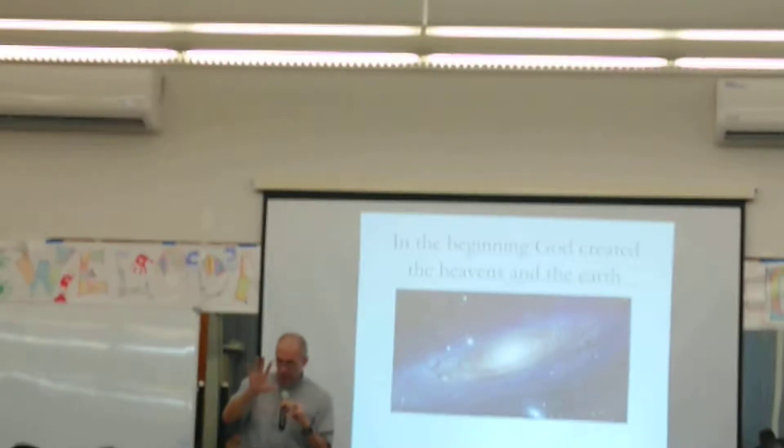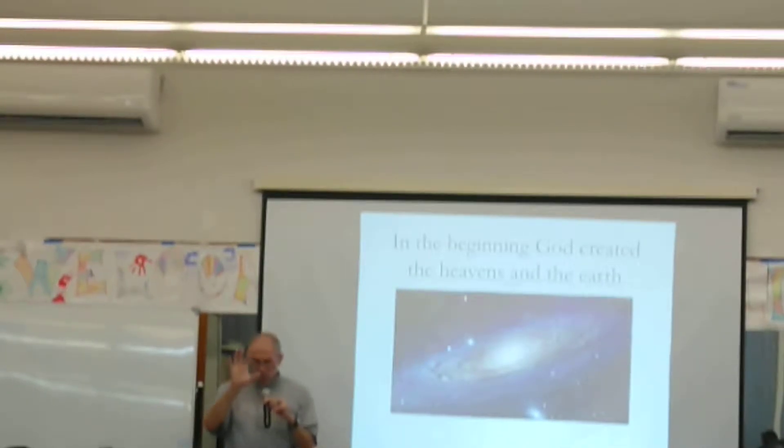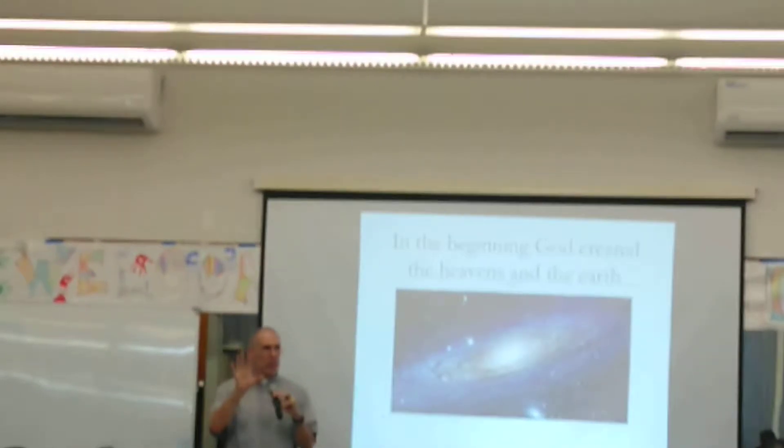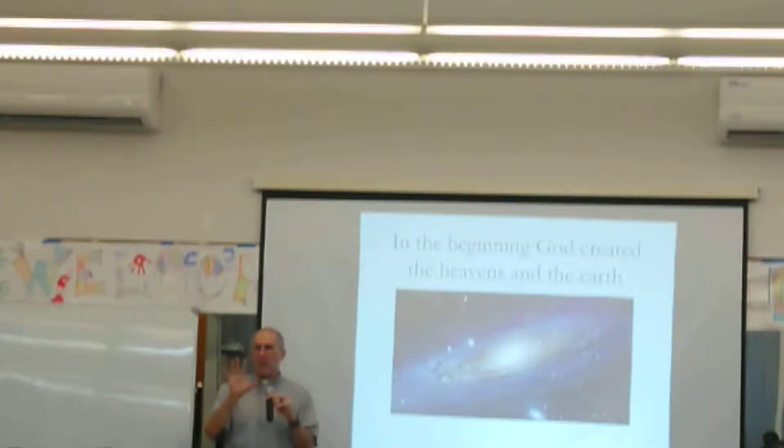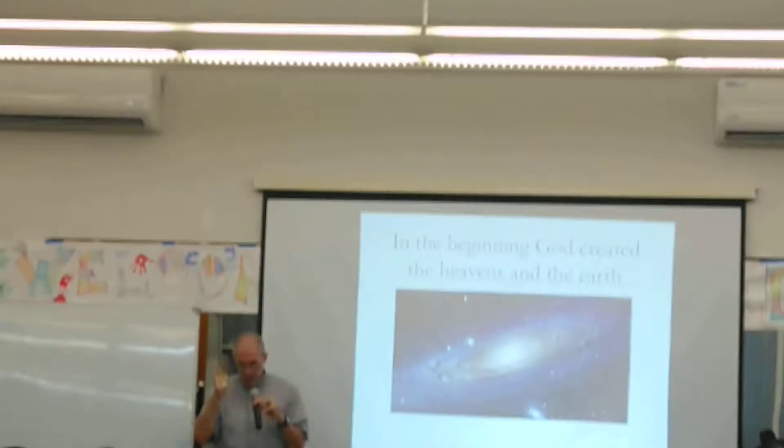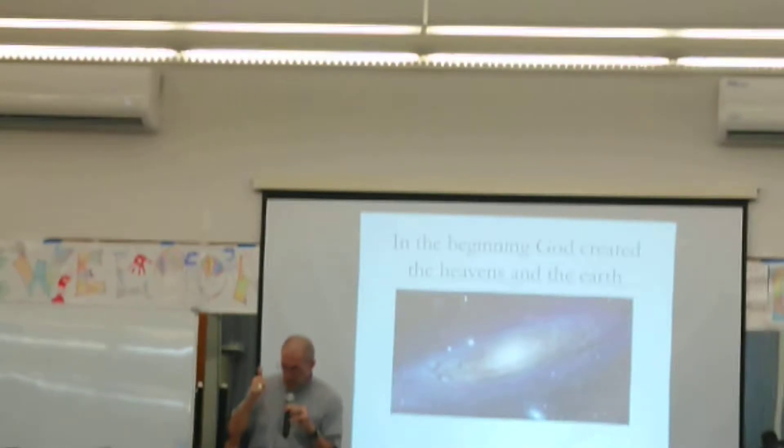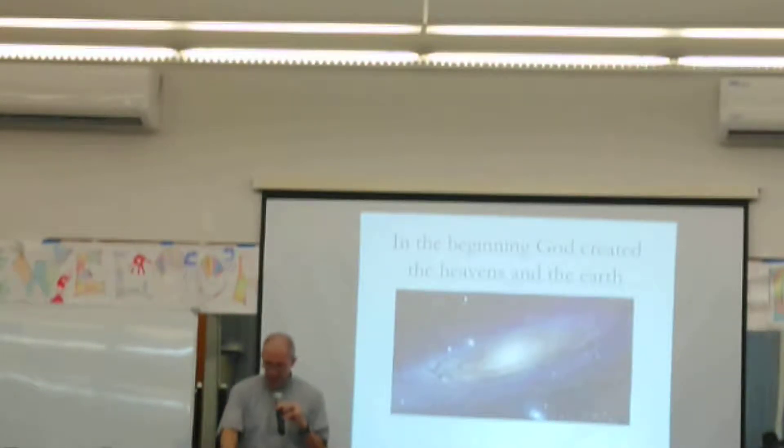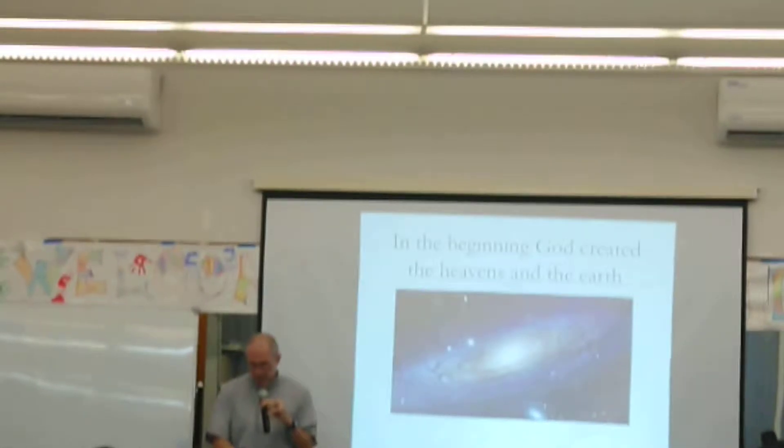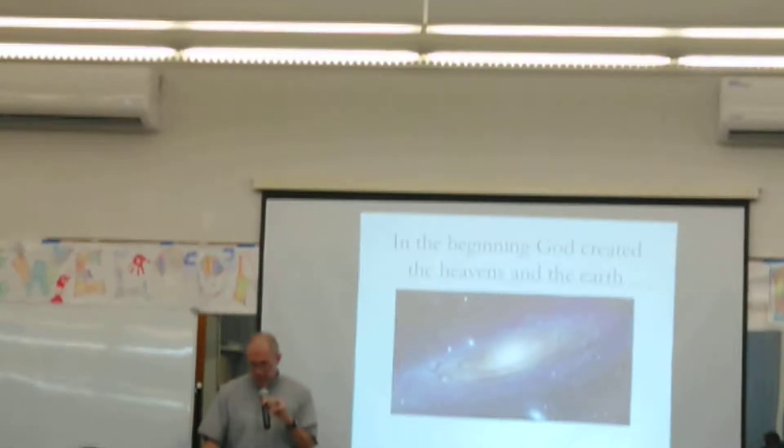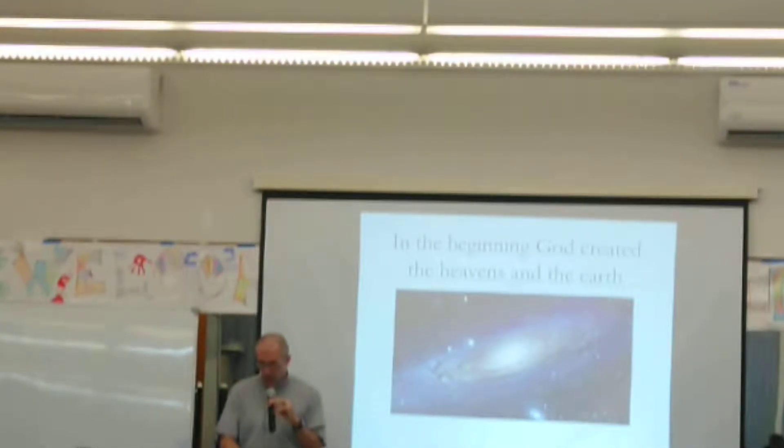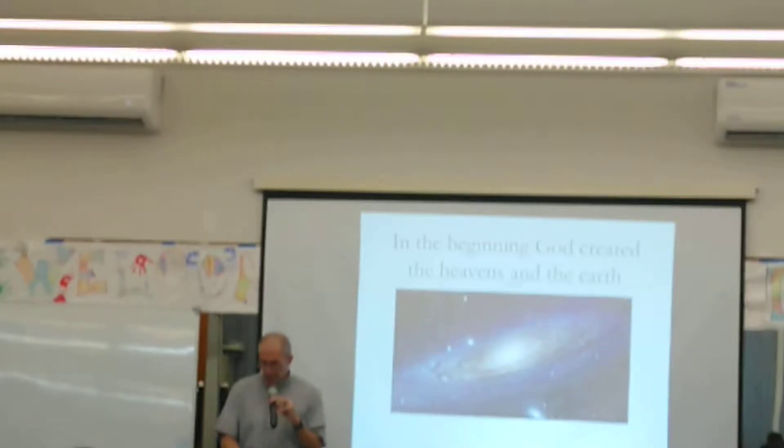So how is he going to deal with the darkness and the wildness of the ocean? He says, and God said, let there be light. And there was light. And God saw that the light was good. And God separated the light from the darkness. And God called the light day, and the darkness he called night. And there was evening, and there was morning, the first day.